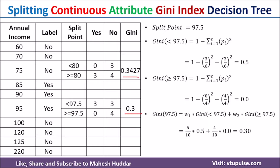Now we decide between the two split points. The Gini for split point 80 is 0.3427 and for 97.5 is 0.30. Since 0.30 is less, 97.5 is the best splitting point for this continuous valued attribute. In this video I discussed how to find the split points, compute their Gini indices, and select the best split point. I hope the concept is clear — please like, share, subscribe, and press the bell icon for regular updates.